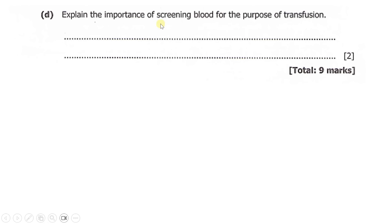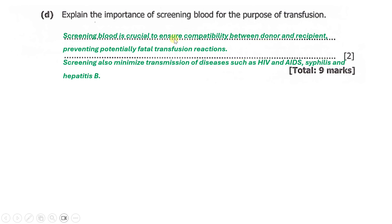Part (e) says: explain the importance of screening blood for the purpose of transfusion. Screening blood is crucial to ensure compatibility between the donor and recipient, preventing potentially fatal transfusion reactions. Screening also minimizes the transmission of diseases such as HIV/AIDS, syphilis, and hepatitis B, so that transfused blood does not transmit these diseases to the recipient.